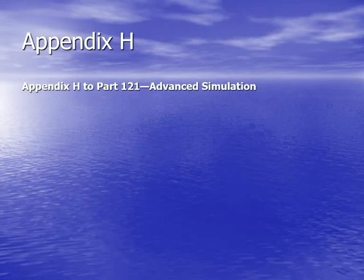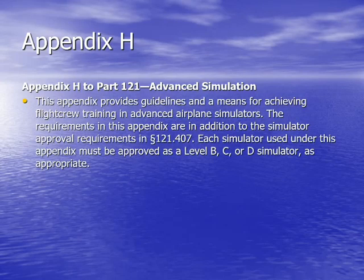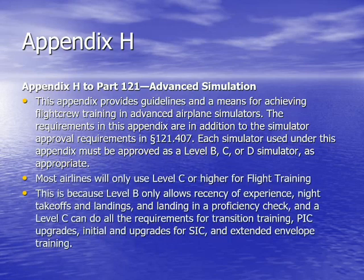In looking at flight training, airlines like to use simulators to accomplish this training rather than using their airplanes, which then have to be taken out of regular service and sometimes would be undergoing fairly unusual things in the course of flight training required for crew members. Appendix H provides the information needed for the air carrier to know what can be done in simulators, and most air carriers are going to use at least a Level C or higher simulator for flight training.